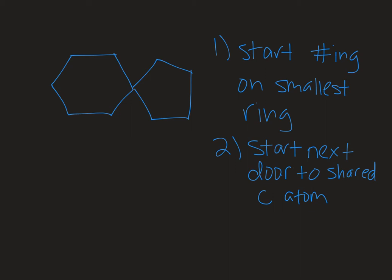So with a spiro compound you start in the small ring, so spiro s small s, and then you start one outside of the shared carbon.